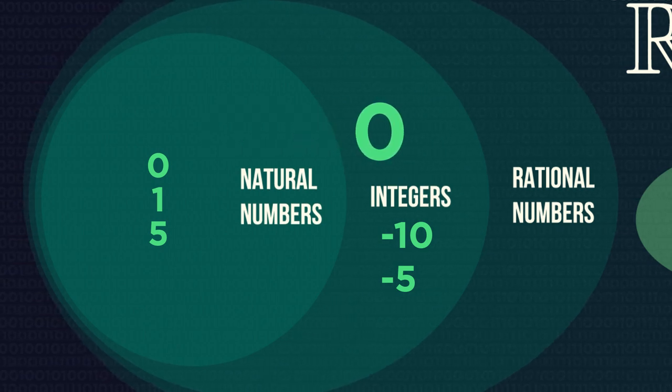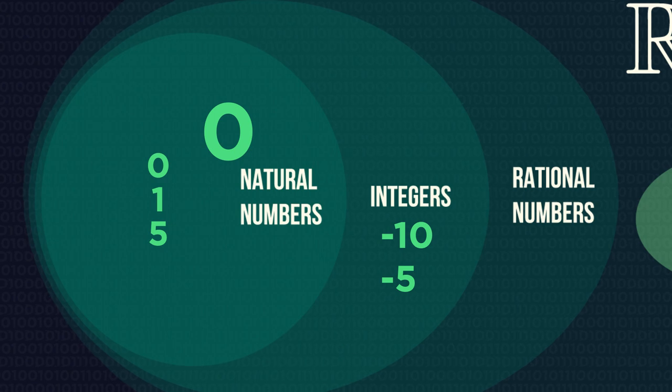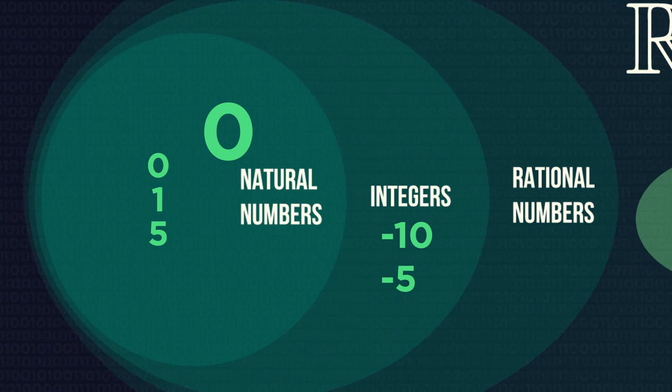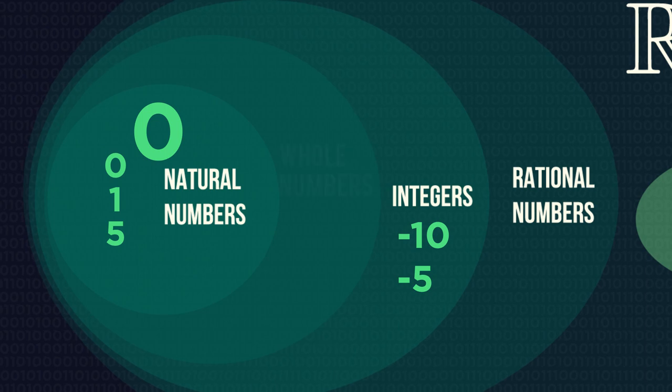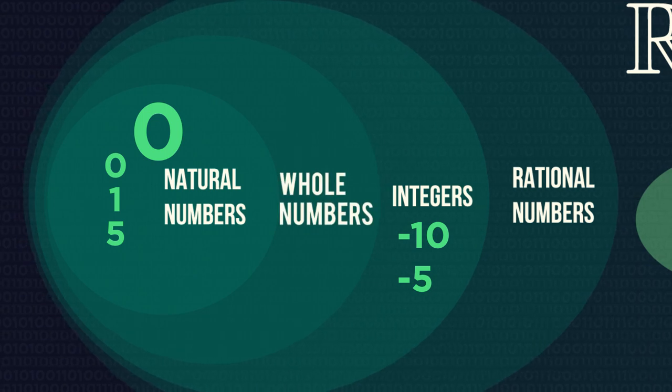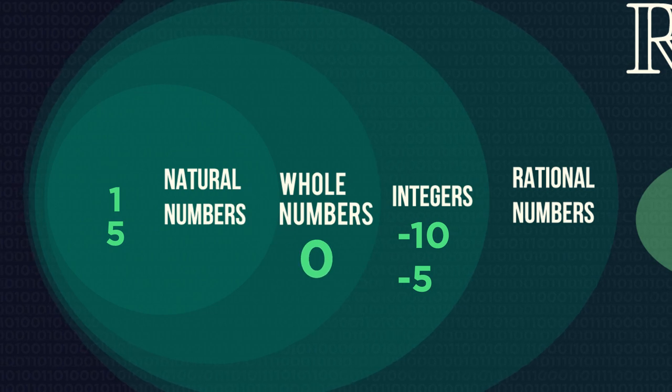Sometimes it isn't. If zero isn't considered a natural number, then a whole new category is needed, called whole numbers, which is exactly the same as natural numbers but also includes the zero.